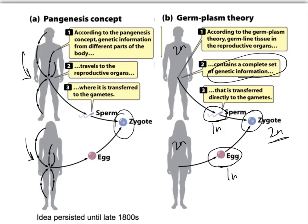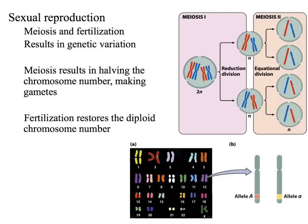In the meiotic process, we have to go from diploid cells to haploid cells so that when the egg and sperm unite, we restore that diploid constitution of chromosomes. Meiosis results in halving of the chromosome number, making these gametes — we're going from diploid to haploid. This happens through two different divisions: in meiosis I, those homologous pairs that make up a diploid organism are separated from each other.